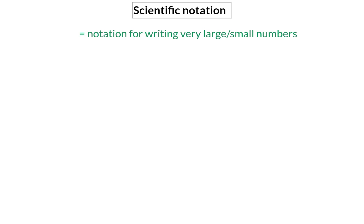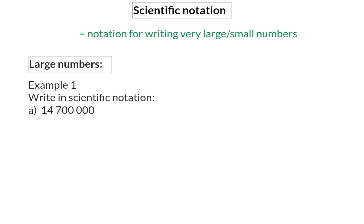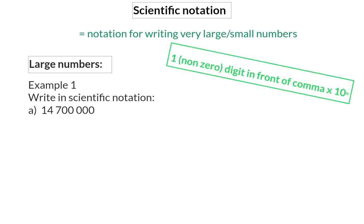In grade 8, you were taught how to write large numbers in scientific notation. Scientific notation involves writing only one non-zero digit in front of the comma. In example A, the comma is directly after the last of the five zeros. For scientific notation, we want to move it to directly after the first non-zero digit, which is the 1.